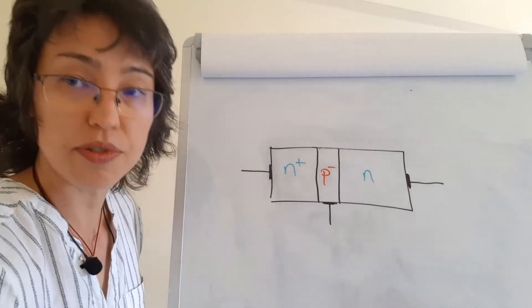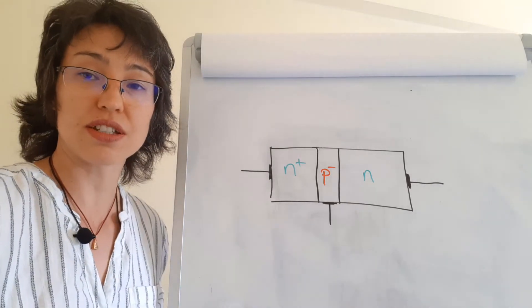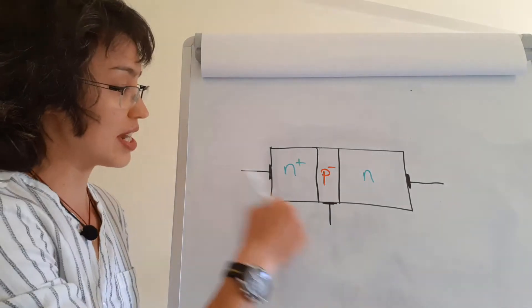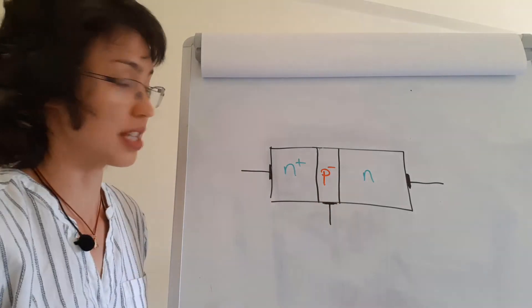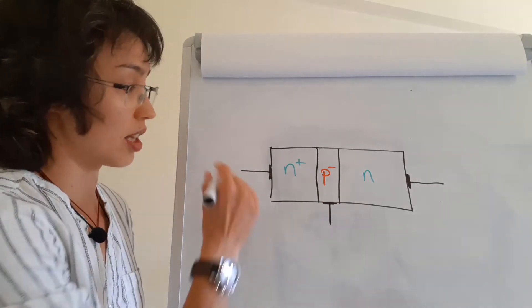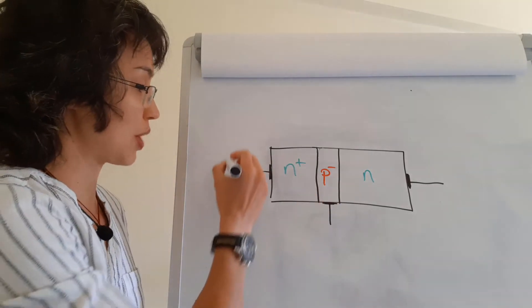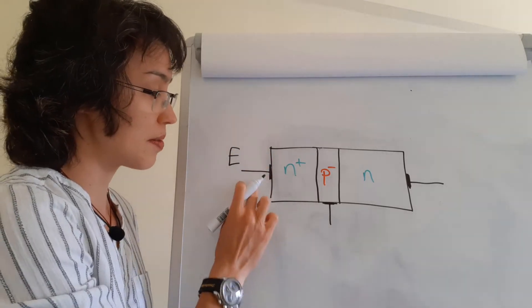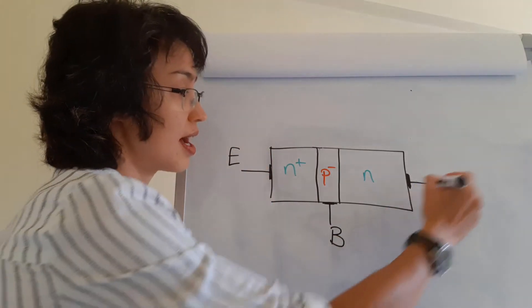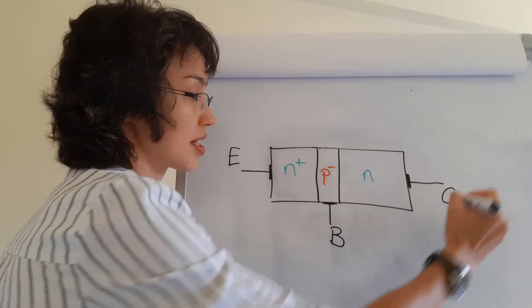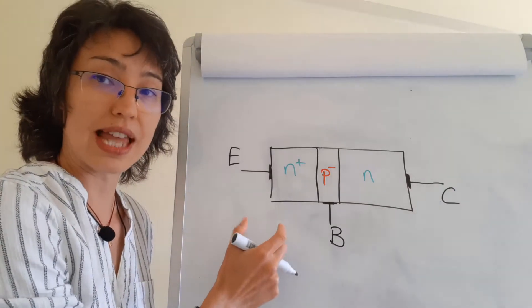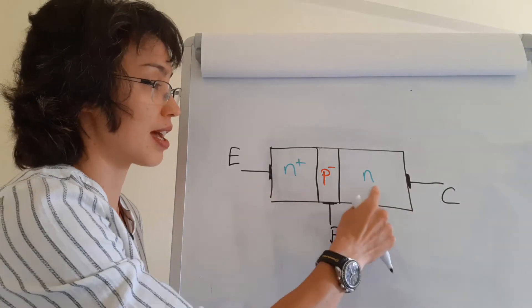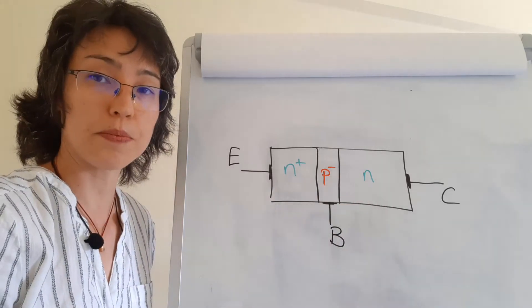You can see from what my transistor looks like it's got three little legs, so we have three connections to these. This one is known as the emitter, this is the base, and this is the collector. So in fact these layers are also known as the emitter layer, the base layer, and the collector layer.